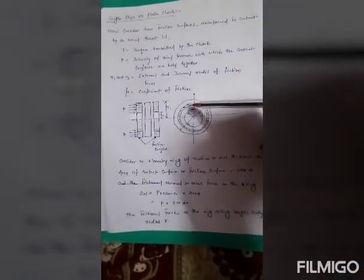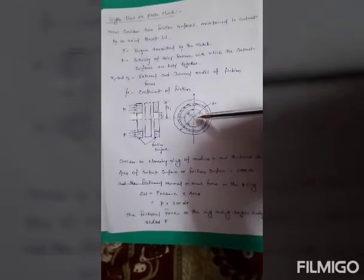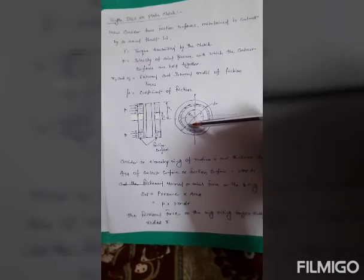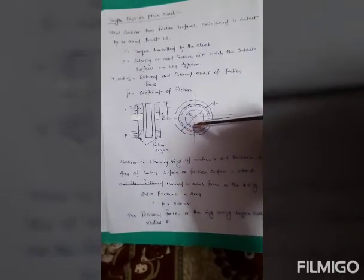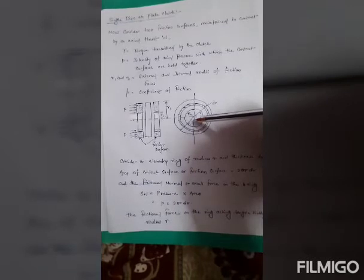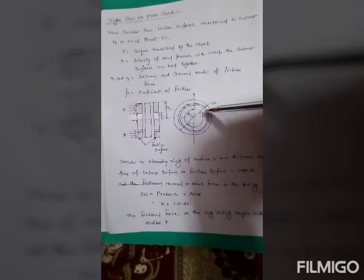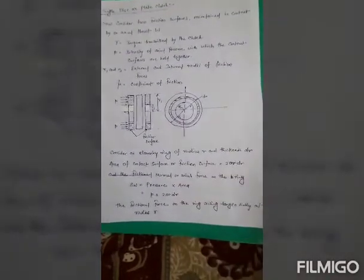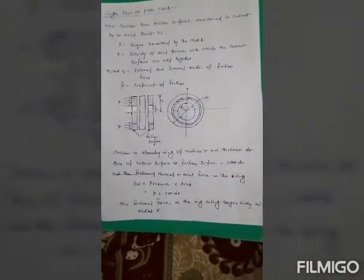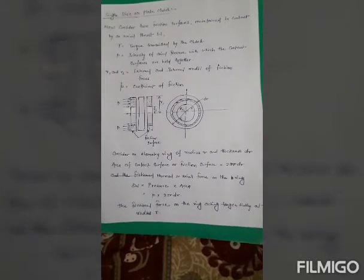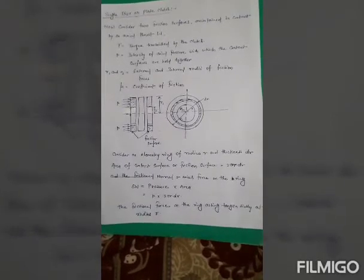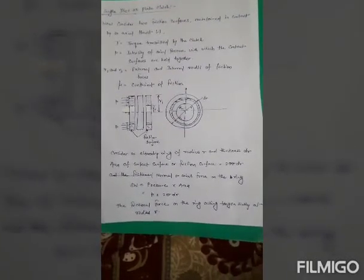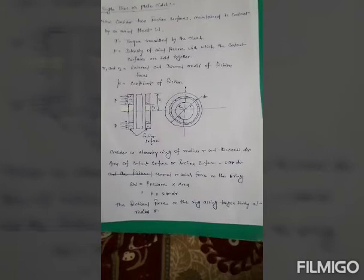We have considered this DR. The internal radius is small r. R1 is given to the outside. R2 is given to the inside. It is small r. Considering the elementary ring, radius small r and thickness DR. Area of contact surface or friction surface is 2πr into DR. The normal or axial force on the ring.